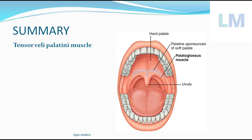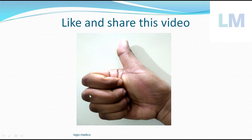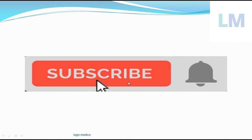In summary, tensor veli palatini is one of the muscles of the soft palate. It creates tension in the soft palate and dilates the Eustachian tube. It begins from the scaphoid fossa, hooks around the pterygoid hamulus, and anchors onto the palatine crest and the posterior border of the hard palate. By tensing the soft palate, it cuts off the connection between nasopharynx and oropharynx so that during swallowing, food cannot enter the nasopharynx and instead travels down the laryngopharynx and esophagus into the stomach.